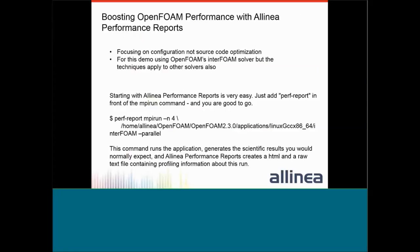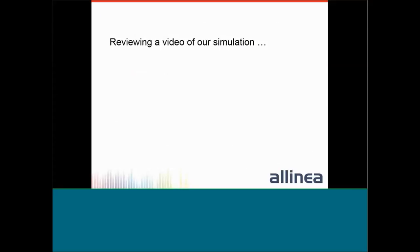For today, I want to focus on using performance reports with OpenFOAM — an open source, free CFD solver. We're going to use OpenFOAM's InterFoam solver for solving a dam break problem, but it would apply very similarly to any other run. Starting performance reports is very easy: you just prefix the run with 'perf-report', so your existing mpirun or mpiexec command gets prefixed with perf-report. It will run and generate your results as usual, and in addition produce an HTML and text format file for review. This also works within batch systems like PBS — just modify the existing run command within your batch submission script.